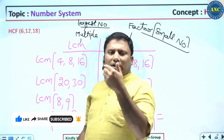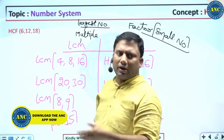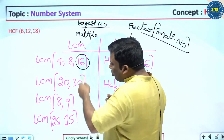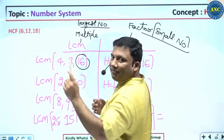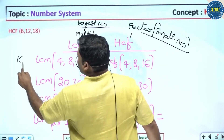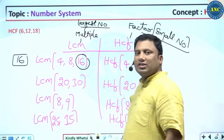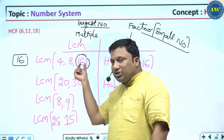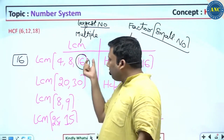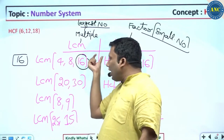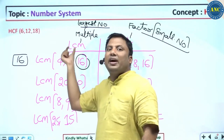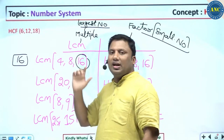What are the multiples of 12? 24, 36, 48, and so on. For LCM, take the largest number. The largest number here is 16. Check whether 16 is divisible by every other number: 16 = 4 × 4, and 16 = 8 × 2. So the answer is 16. If the largest number is divisible by every other number, then that largest number is the LCM.